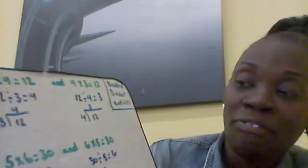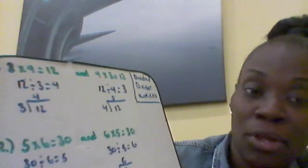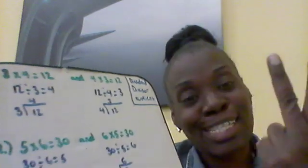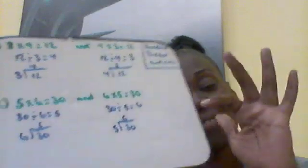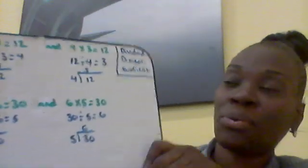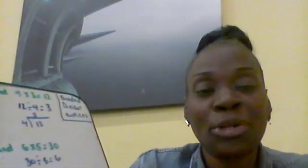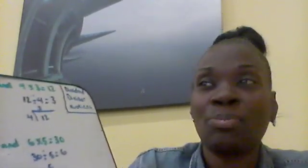Let's look at our second problem. 5 times 6 equals 30, and 6 times 5 equals 30. How do we know that? We count by fives: 5, 10, 15, 20, 25, 30. When it's a multiplication sentence, it doesn't matter how you order the factors — the product will always be the same. The number behind the equal sign is the product. The factors come before the equal sign. So 5 times 6 equals 30, and 6 times 5 equals 30.